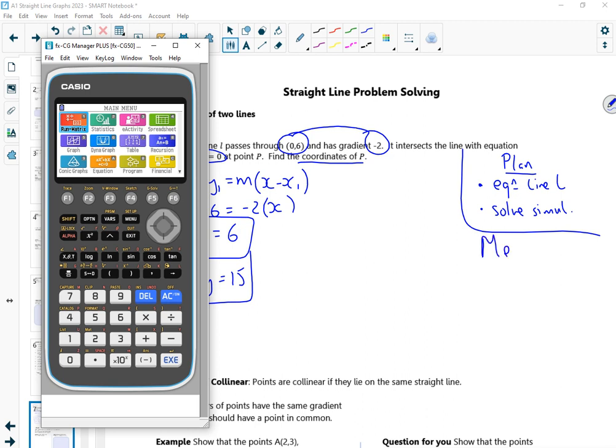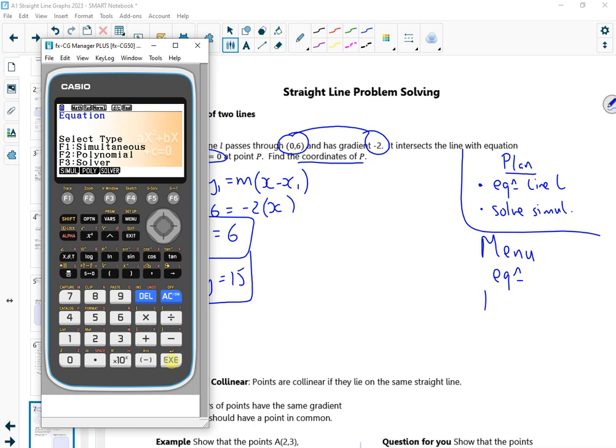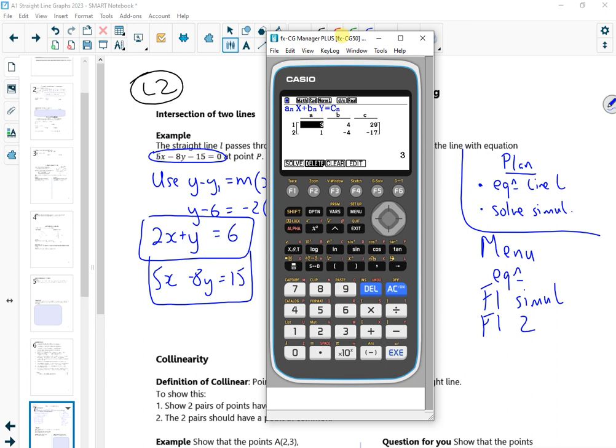So I want menu and equation. So menu pressed, equation, f1 for simul. Got two unknowns, so f1 again. And then I want to put the coefficients in. Can I see my coefficients? So I want 2xy, 1xy, 6 does the top line. Then 5xy minus 8xy, 15, does the bottom line. Then press again.